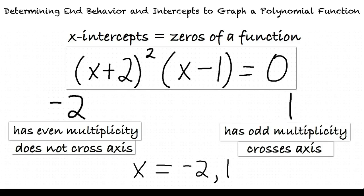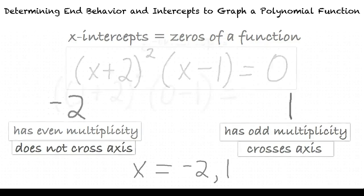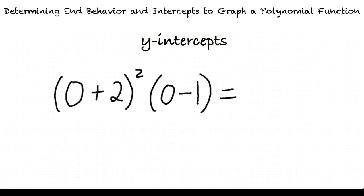Now we should find the y-intercepts by substituting 0 for x in the polynomial function and setting that function equal to y. Thus, our y-intercept is (0+2)²(0-1), which results in an answer of -4.